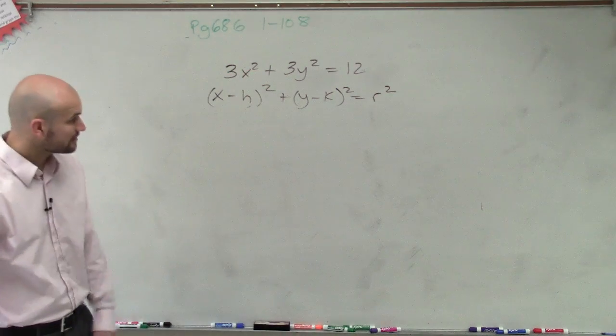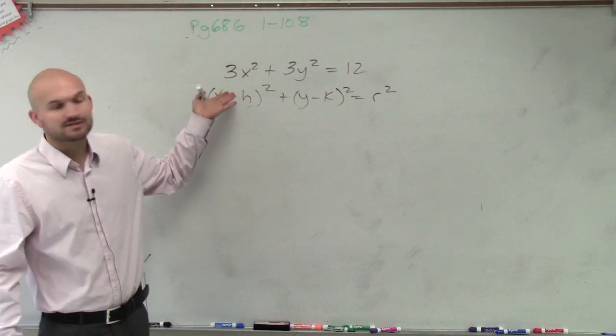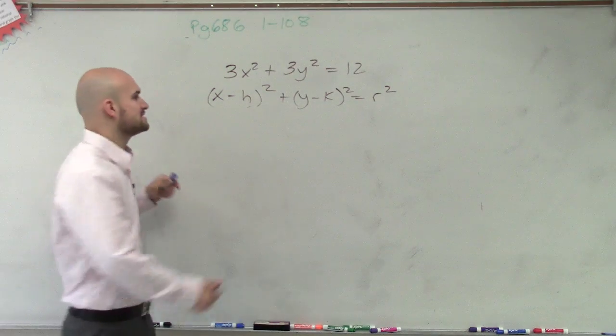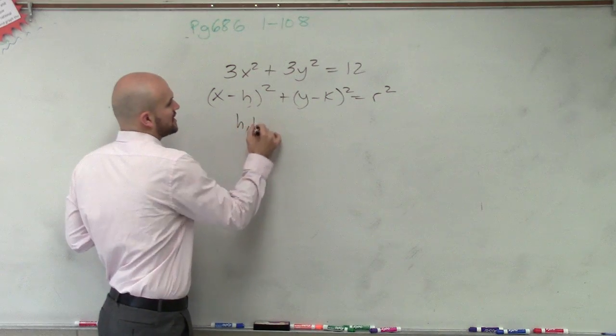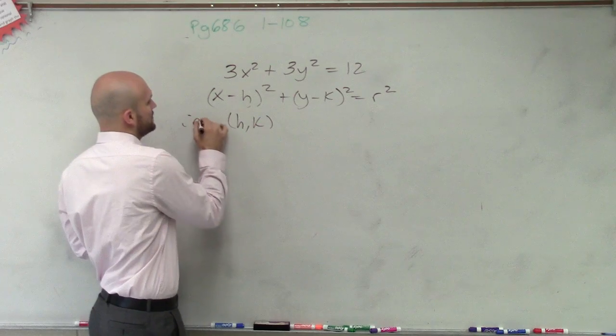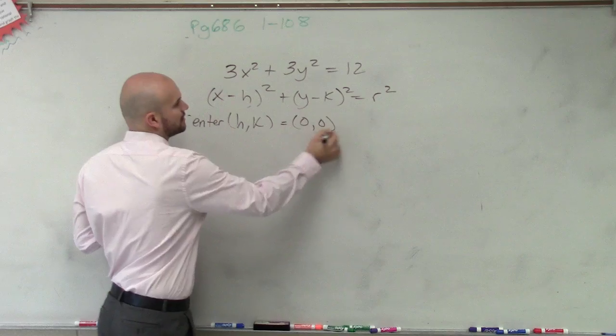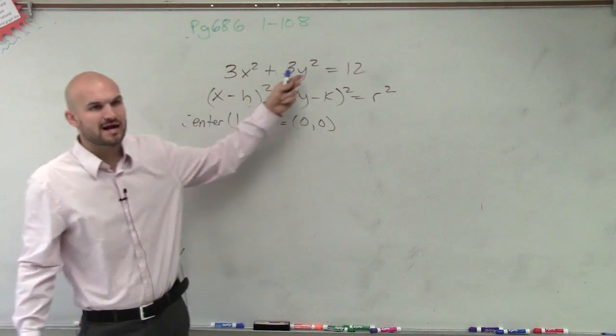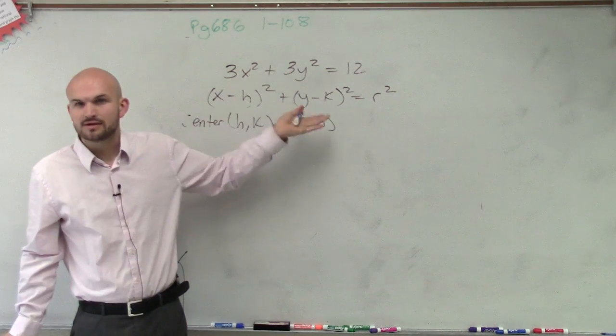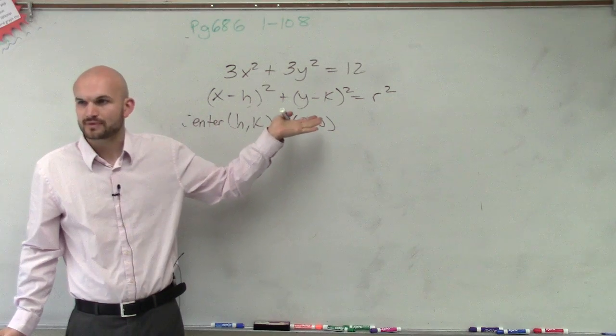Now, in this case, we don't have x or y minus anything, right? So therefore, we can say that our h comma k, which is our center, is at 0 comma 0. We're not subtracting anything from the x or from the y. So we can say the center is 0, 0, right?